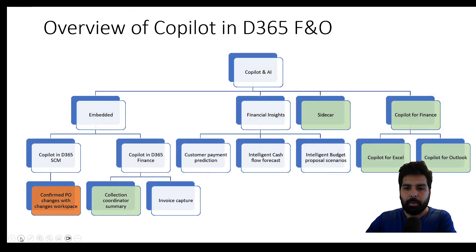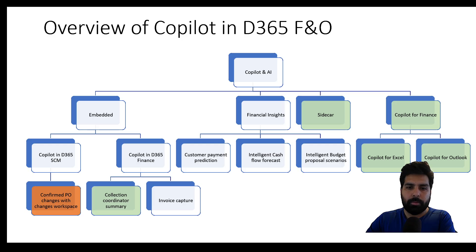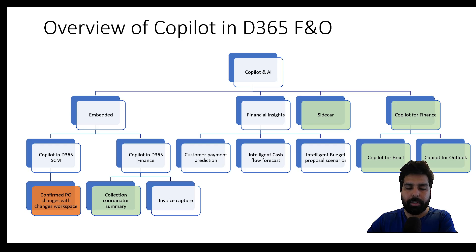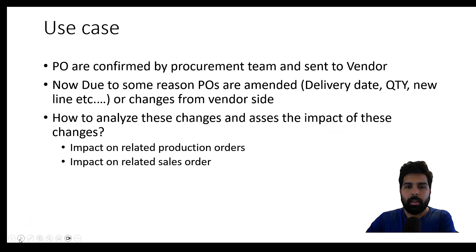This is the structure we have put together to understand the features and functionalities available as part of Copilot and AI. We have seen things about sidecar Copilot for Finance along with the Copilot in Finance feature spoken about in the last video. Today's focus is around the confirmed PO changes workspace which we have as part of Copilot in Supply Chain. Just to clarify, this particular feature can be used with or without Copilot, but Copilot helps you generate additional functionalities and analyze more efficiently.